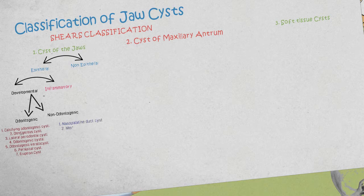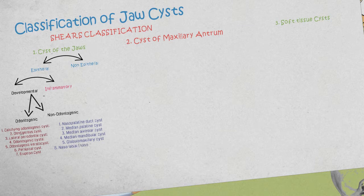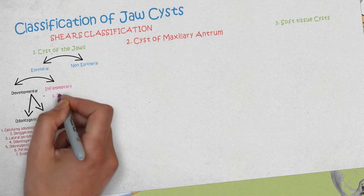The non-odontogenic cysts include: number one, the nasopalatine duct cysts; number two, the median palatine cysts; number three, the median alveolar cysts; number four, the median mandibular cysts; number five, the globulomaxillary cysts; and number six, the nasal labial or nasal alveolar cysts.